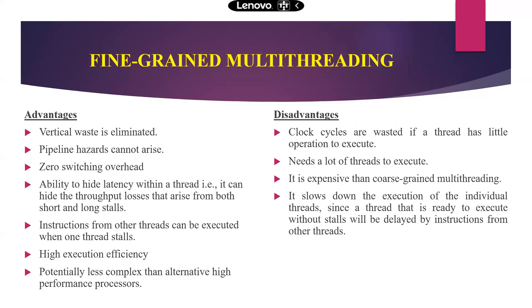The advantages of fine-grained multi-threading: vertical wastage is eliminated, pipeline hazards cannot arise, zero switching overhead, ability to hide latency — it can hide throughput losses from both short and long stalls. Instructions from other threads can be executed when one thread stalls, giving high execution efficiency and potentially less complex high-performance processing. The drawback: clock cycles are wasted if a thread has little operation to execute, it needs many threads, and it is more expensive than coarse-grained multi-threading. It slows down execution of individual threads since a ready thread will be delayed by instructions from other threads.